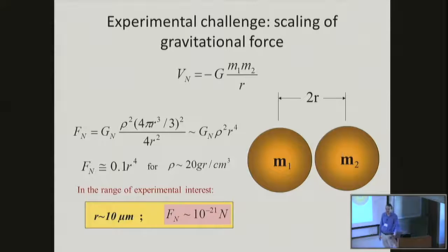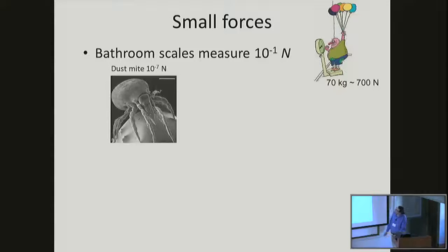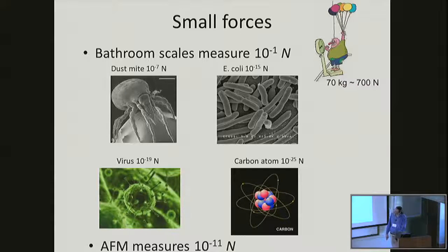To give people a sense of scale, this is like saying I have a person standing on a bathroom scale exerting a force of a few hundred Newtons. If my spring was really precise, maybe I could tell the difference between 700 and 700.1. But if I wanted to measure if a dust mite landed on their shoulder, I would need accuracy at 10^-7 level. Or if a virus landed, I'd need 10^-19. An extra individual carbon atom would need sensitivity at 10^-25 Newtons. So the force here is somewhere between detecting that extra virus or carbon atom. As another point of reference, the atomic force microscope measures typical forces at 10^-11 Newtons, so we're talking about 10 billion times smaller sensitivity.